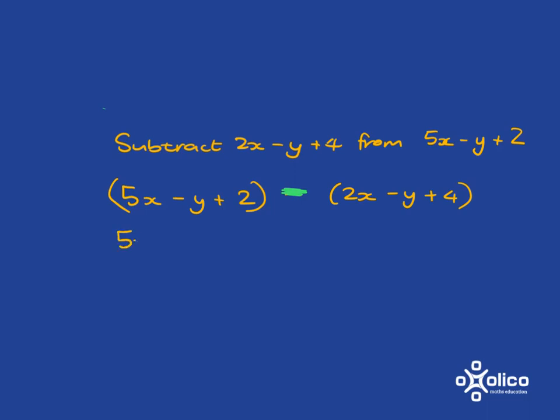So let's sort it out. 5x - y + 2. You're going to subtract 2x. But then have a look here. You're going to subtract, and you've got subtracting a -y, which is going to give you +y. And then the subtraction also applies to the 4, so you're going to get subtract 4.